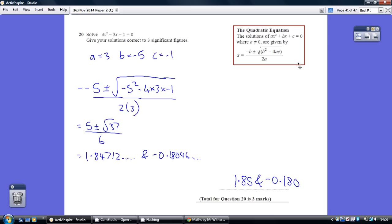So we just need to substitute in knowing what a, b and c are. So a is the number in front of the x squared which is plus 3. b is the number in front of the x which is minus 5. Make sure you've got minus 5. And c is the number on its own and that is the minus 1.